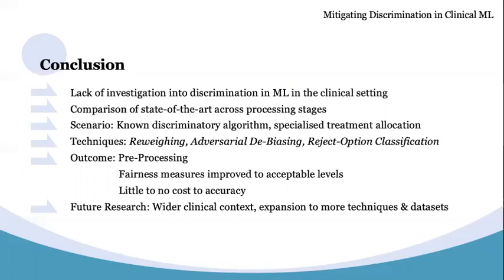Suggestions for future research include repeating these experiments using a different dataset, widening to other clinical contexts, investigating other protected attributes and other processing techniques, focusing on a model which isn't distribution-centric. As this study was focused on distributed fairness, focusing on other forms of fairness, particularly in healthcare, could be beneficial, highlighting individual fairness as well as group fairness. Finally, investigating policy and guidelines for fairness in clinical machine learning.